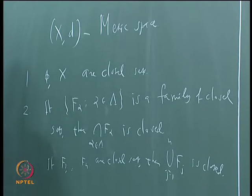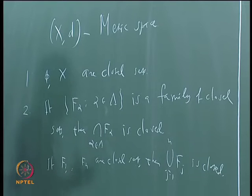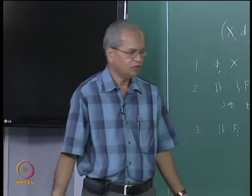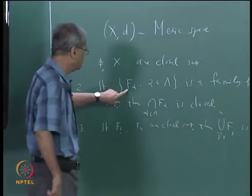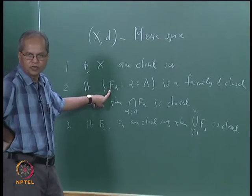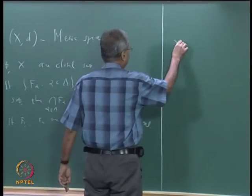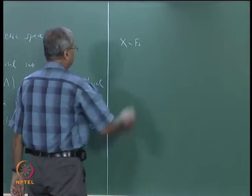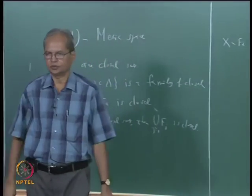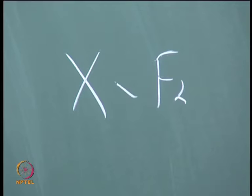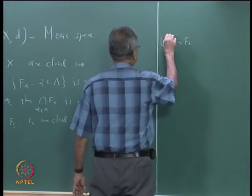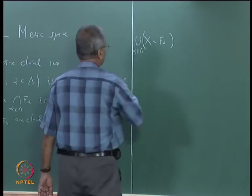As far as proofs of these are concerned, one can proceed in several ways. One way is to use the fact that any set A is closed if and only if its complement is open. Using that, since each F_alpha is closed, its complement X minus F_alpha is open. And since the union of any arbitrary family of open sets is open, the union of these over alpha in lambda is also open.